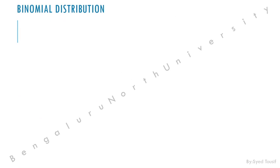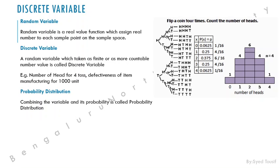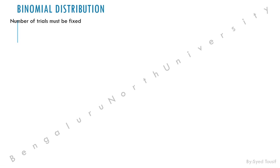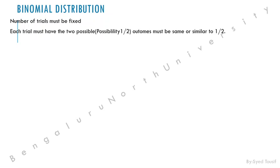Now for binomial distribution — when should we use it? The number of trials must be fixed (for example, tossing a coin exactly four times). Each trial must have the same probability of success (for example, one by two). The outcome must be binary — the probability of getting a tail is the same as getting a head. All trials are independent.